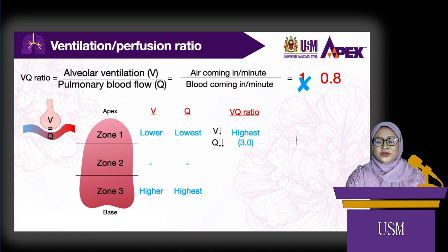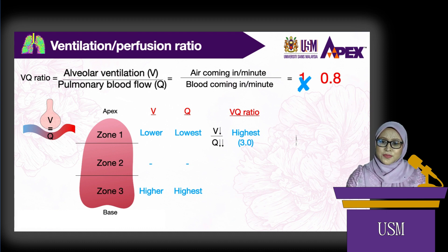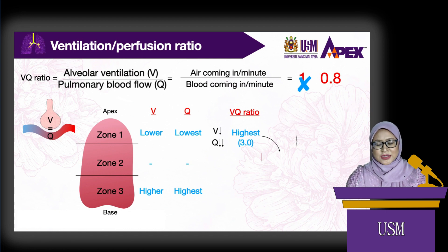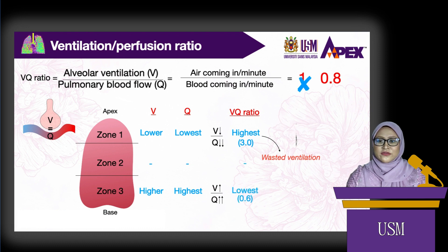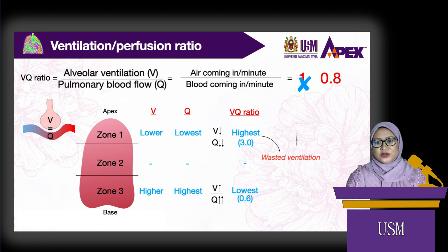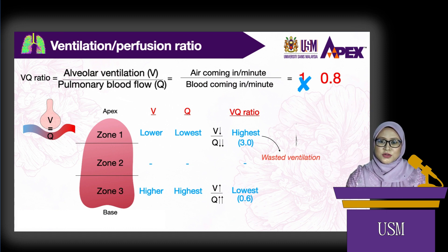At the apex, ventilation is reduced, but perfusion is even more reduced, so the VQ ratio becomes higher. The VQ ratio is around 3 at the apex, meaning there is more ventilation than perfusion — this is called wasted ventilation. At the base, ventilation is higher, but perfusion is even higher. The VQ ratio at the base is around 0.6, meaning there is more perfusion than ventilation — this is called wasted perfusion.